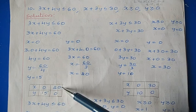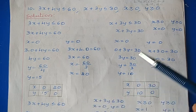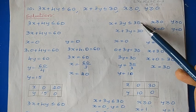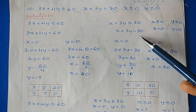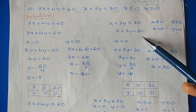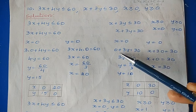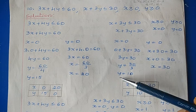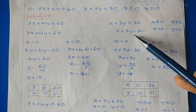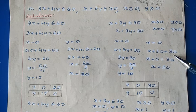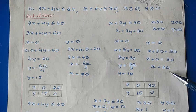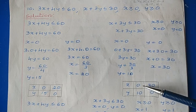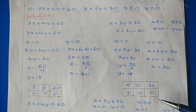Now take the second inequality x plus 3y less than or equal to 30. Convert this into an equality statement: x plus 3y is equal to 30. Take x equal to 0: we get 3y equal to 30, so y equal to 10. Put y equal to 0: we get x equal to 30. So for this equality statement we have got two solutions: (0, 10) and (30, 0).